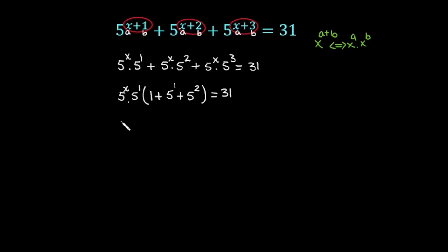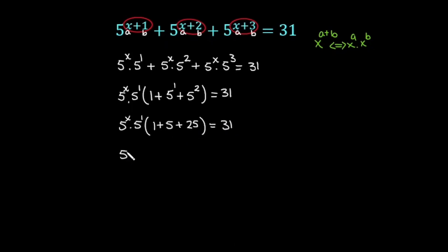In the next step: 1 plus 5 plus 5 raised to the power 2, which is 25, equals 31. So we have 5 raised to the power x times the sum 5 plus 25 plus 1 — that is 5 times 31 — is equal to 31.